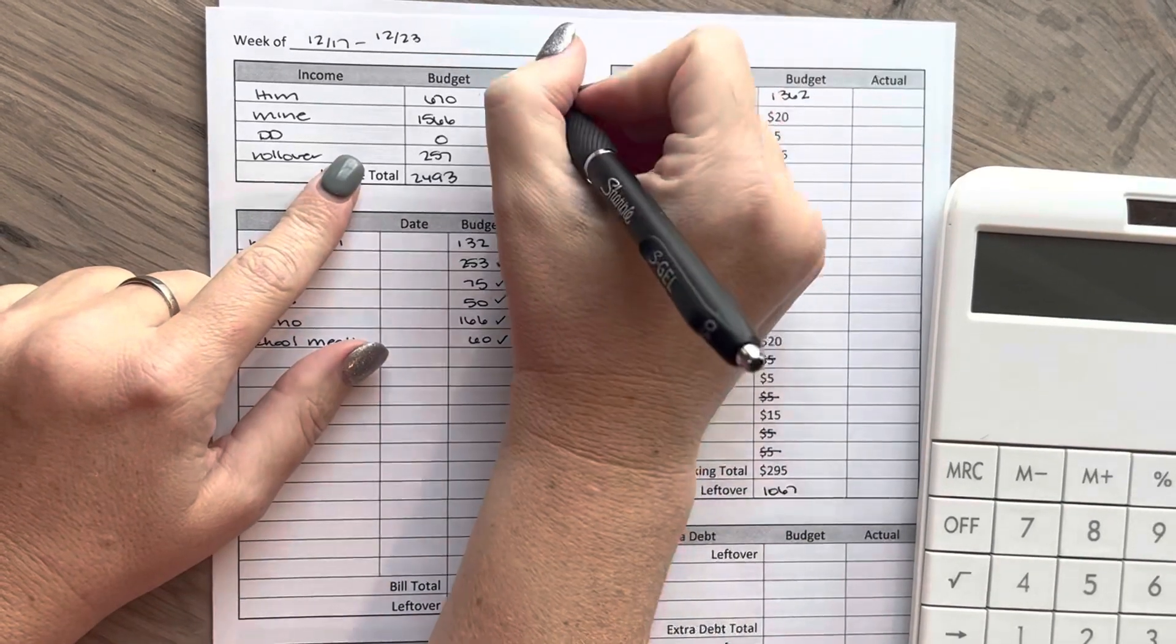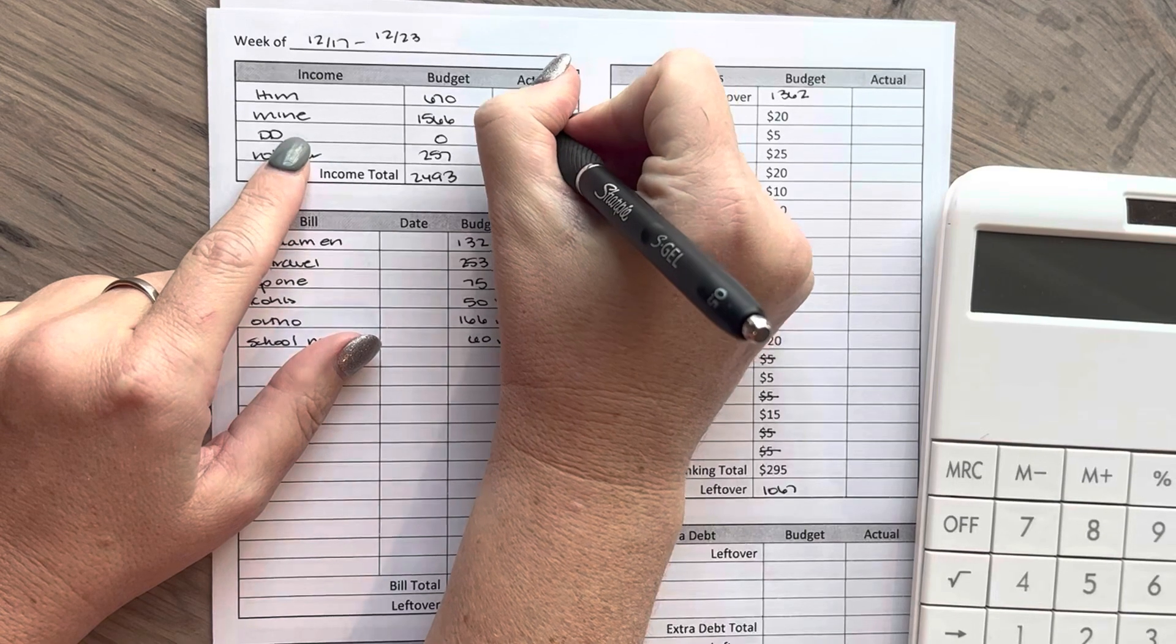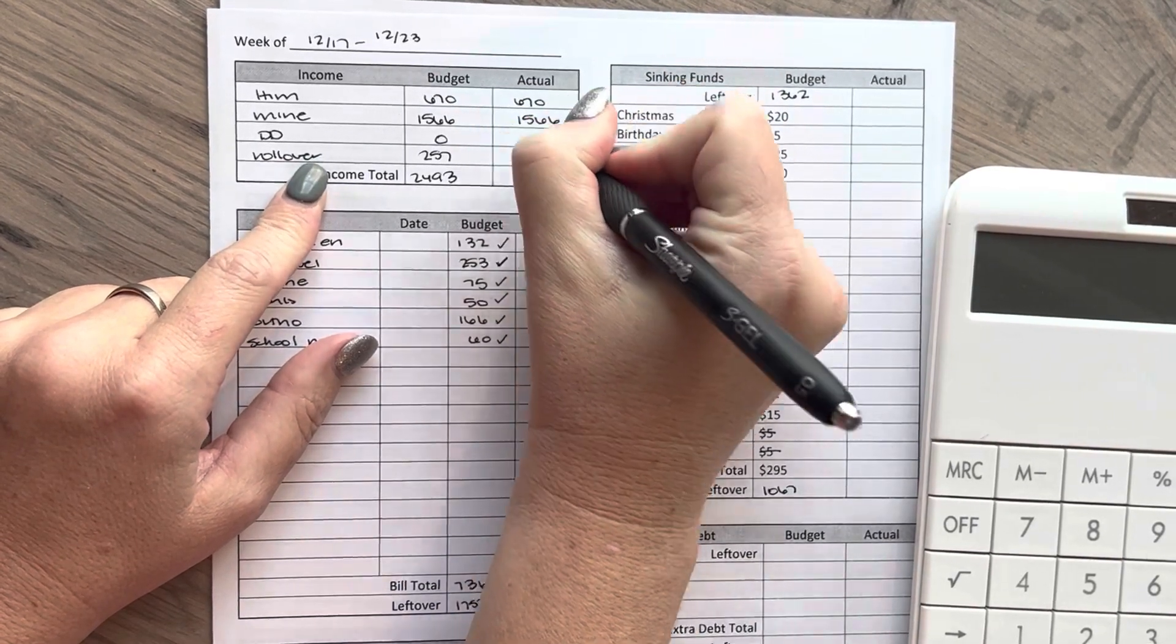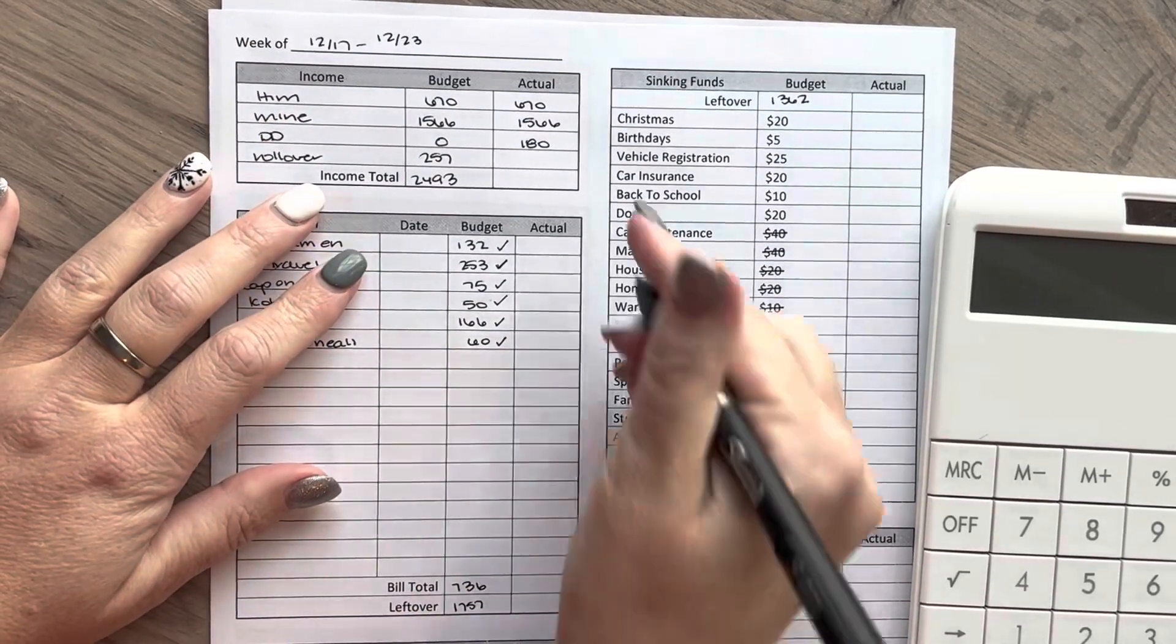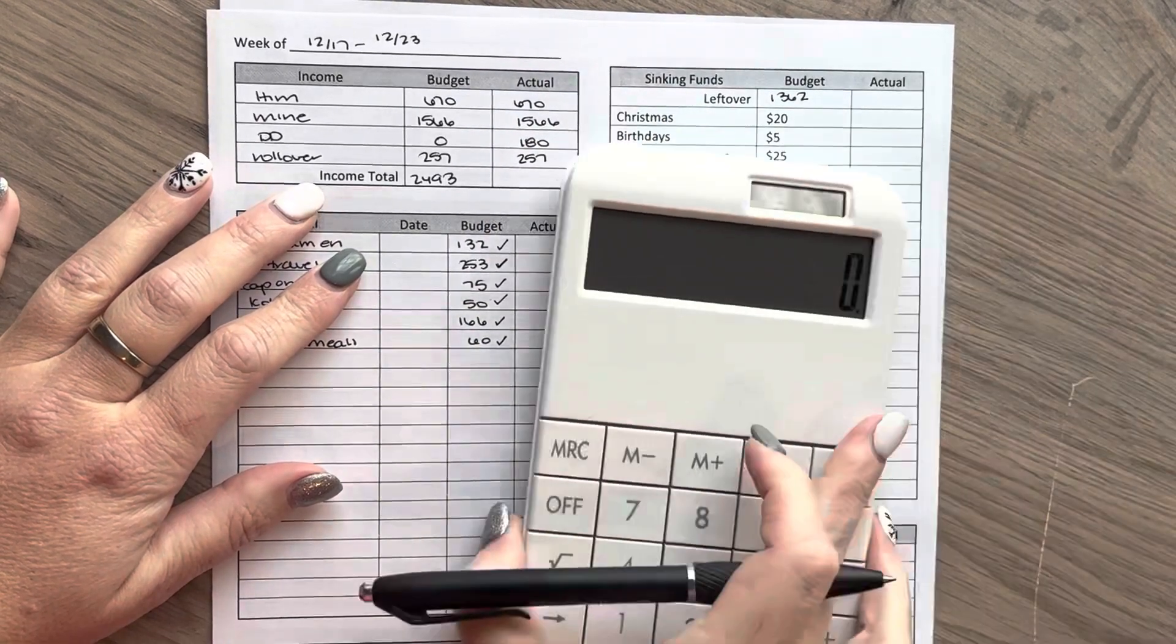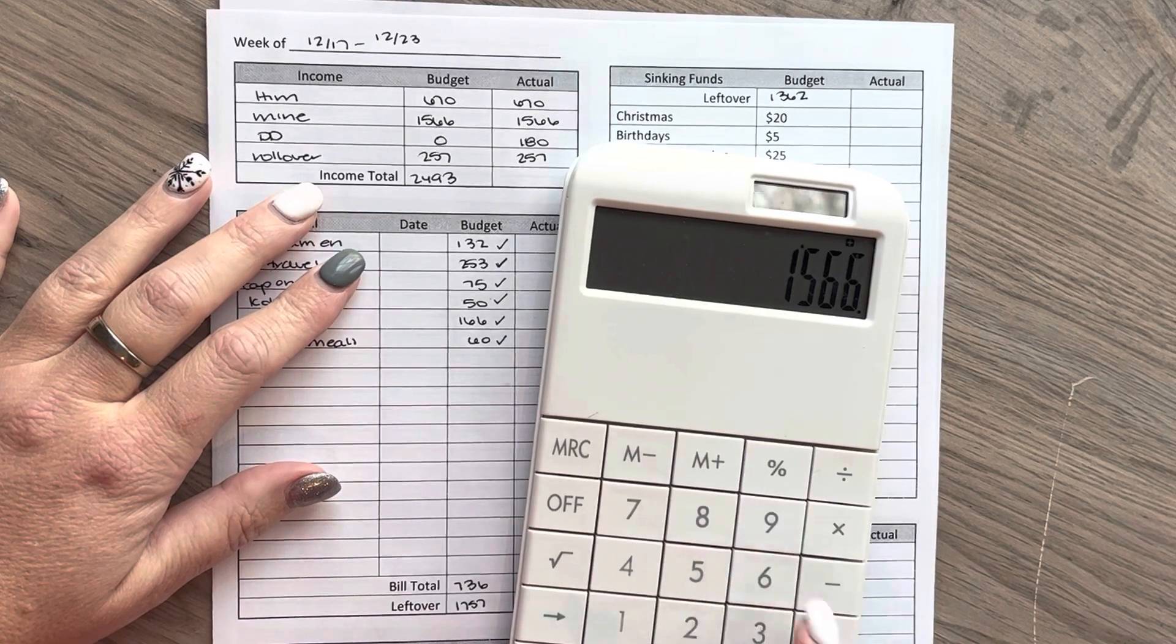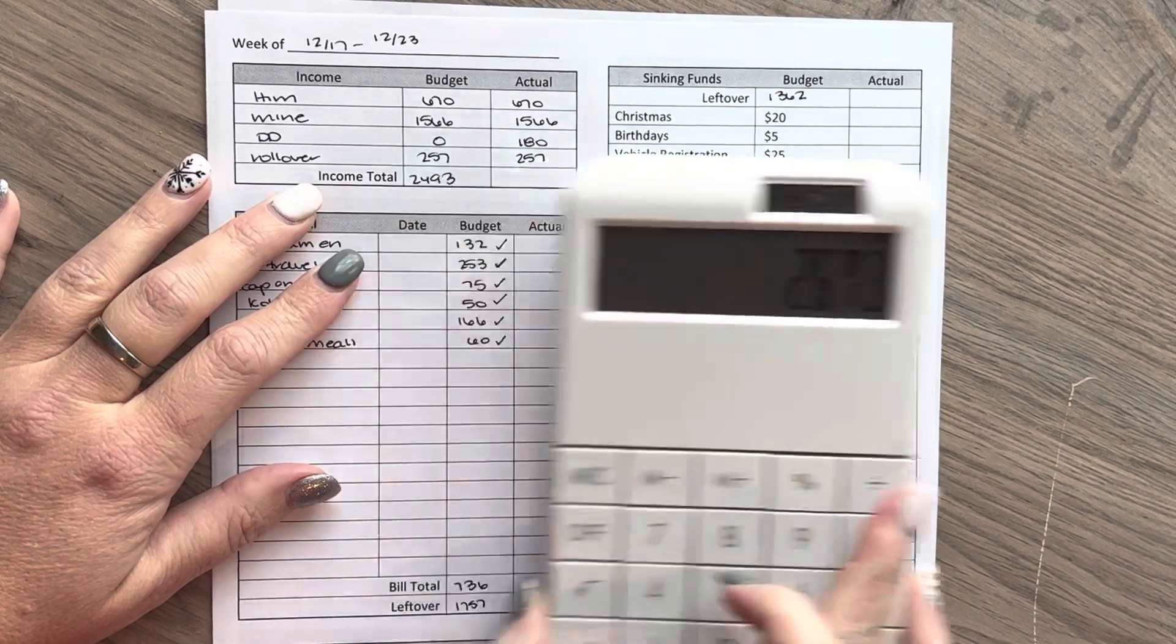So my husband did get paid his $670. I did get paid the $1566. DoorDash, we did hit our goal. We actually exceeded it, but that extra cash we are setting aside for other things. And then we did roll over the $257. So let me total these values up here. So that comes out to $2673.